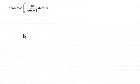Hi. Now, in this question, we're asked to show that the integral of 18 divided by the square root of 6x plus 1, integrated with respect to x between the limits x equals 0 and x equals 4, equals 24.